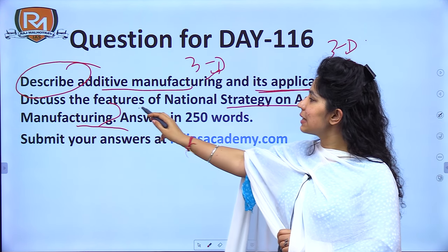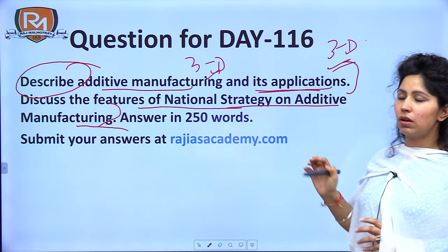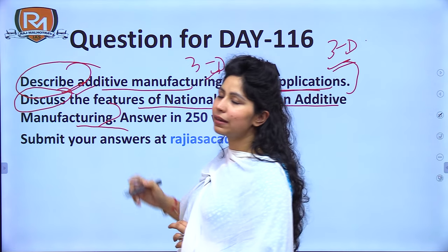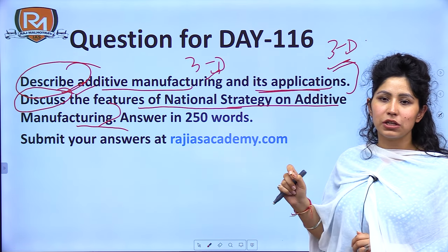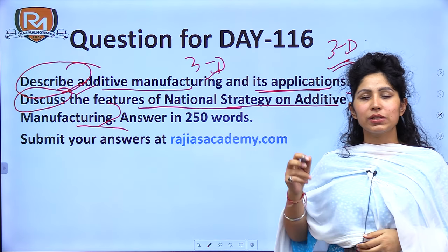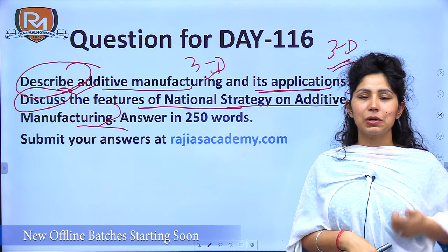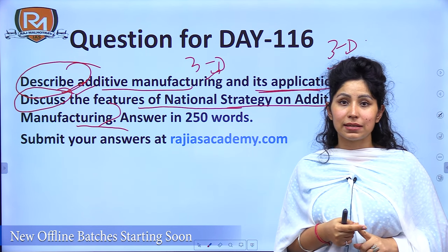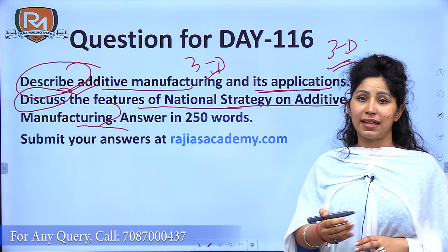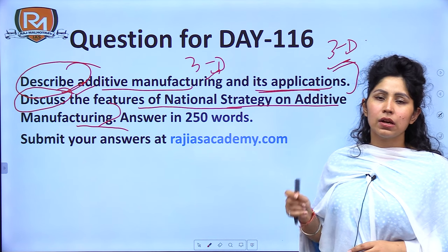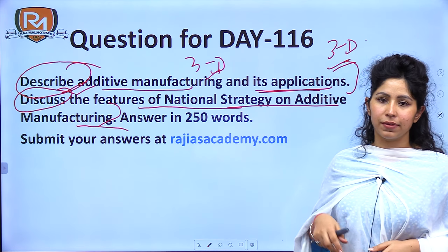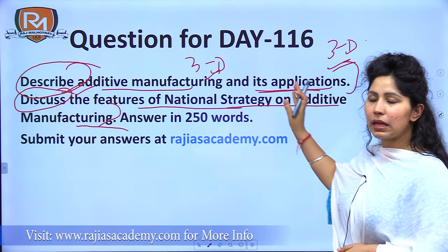The second part says: discuss the features of the National Strategy on Additive Manufacturing. The directive here is 'discuss', which means you don't just list the features — you have to write the other side as well: any challenges associated, statistics or data not in favour, or whether it will be possible to attain the aims of the national strategy. All of this has to be covered.